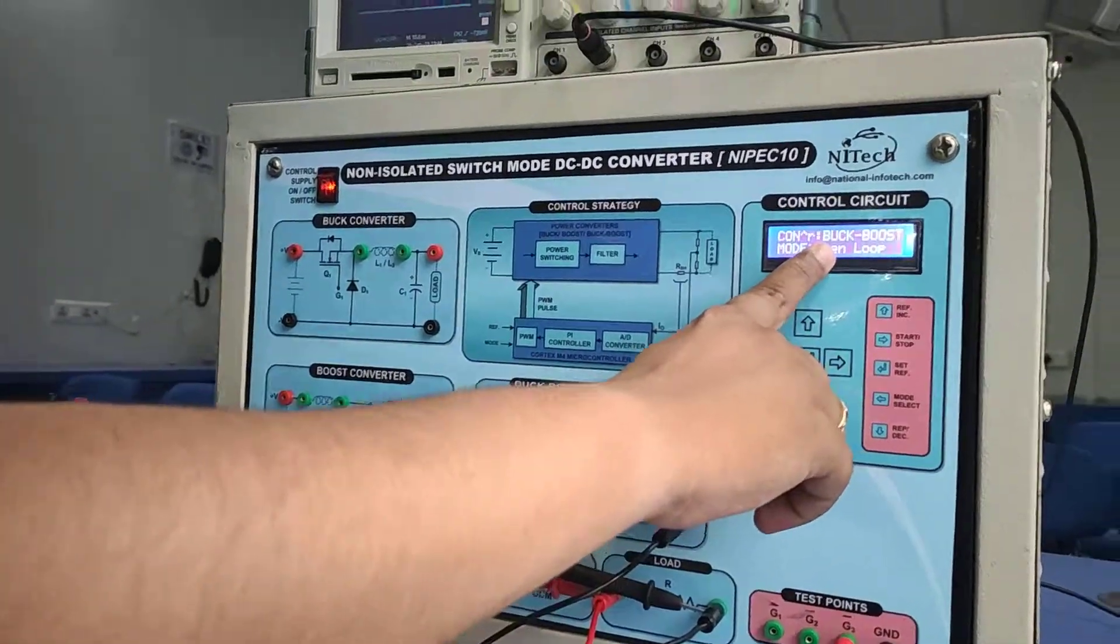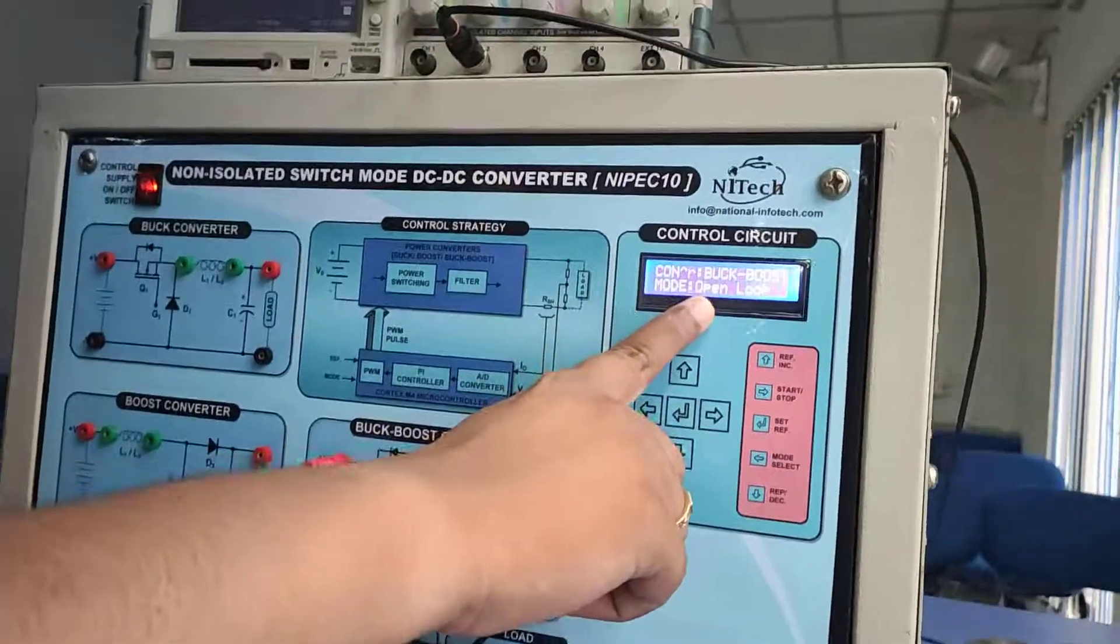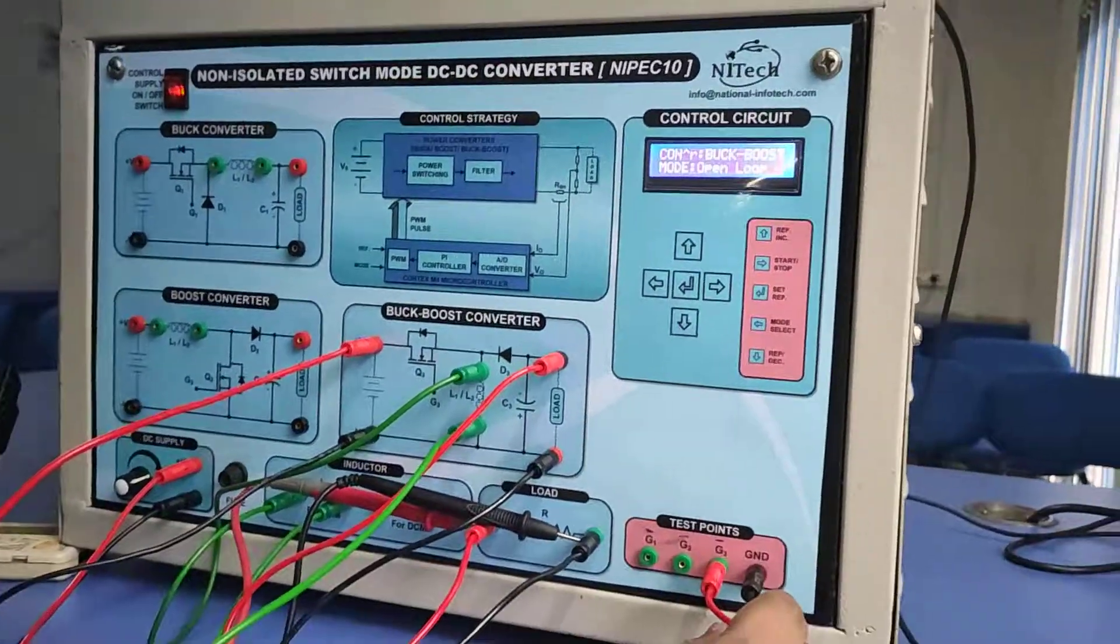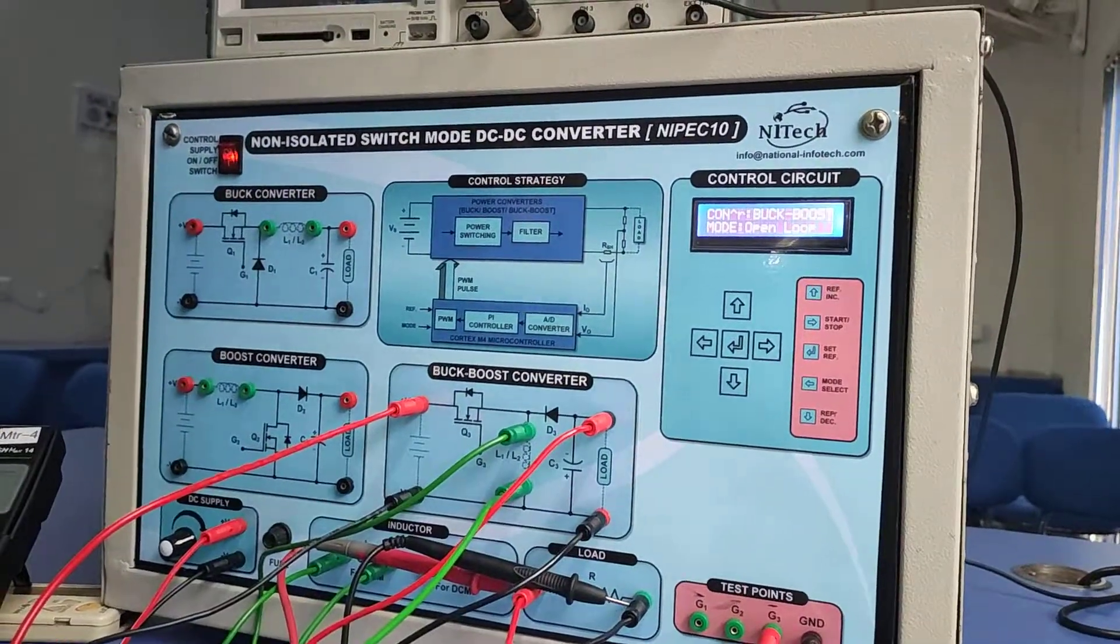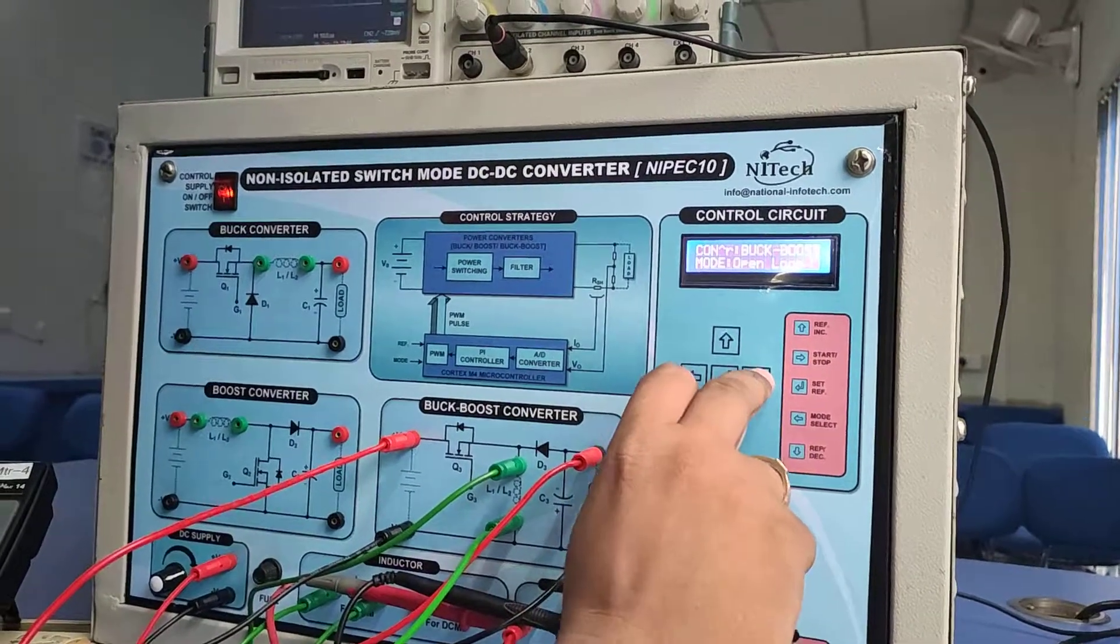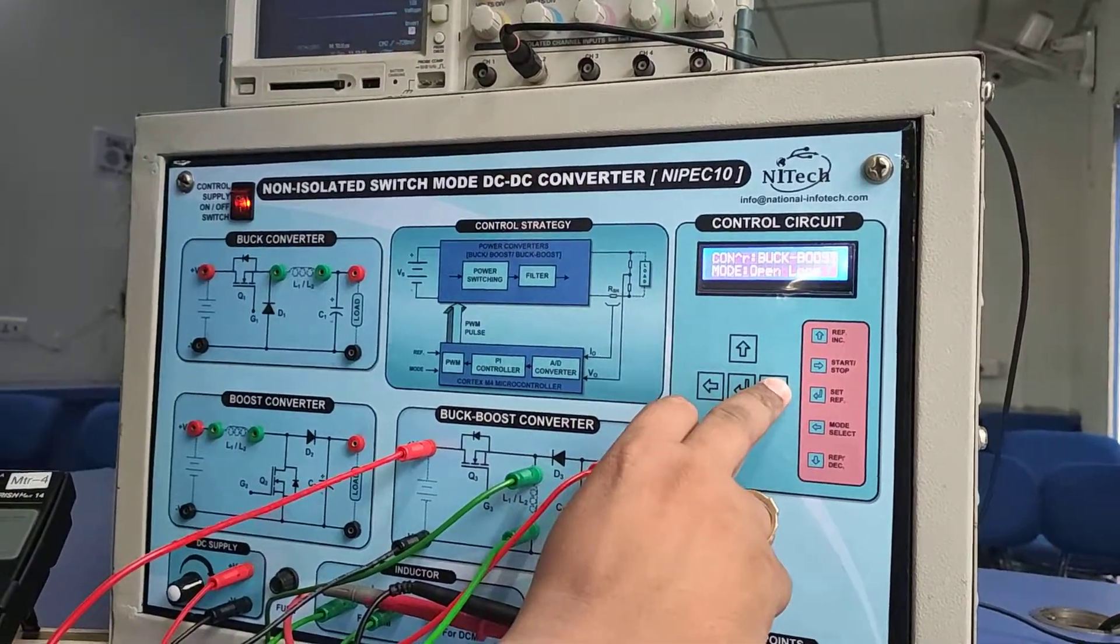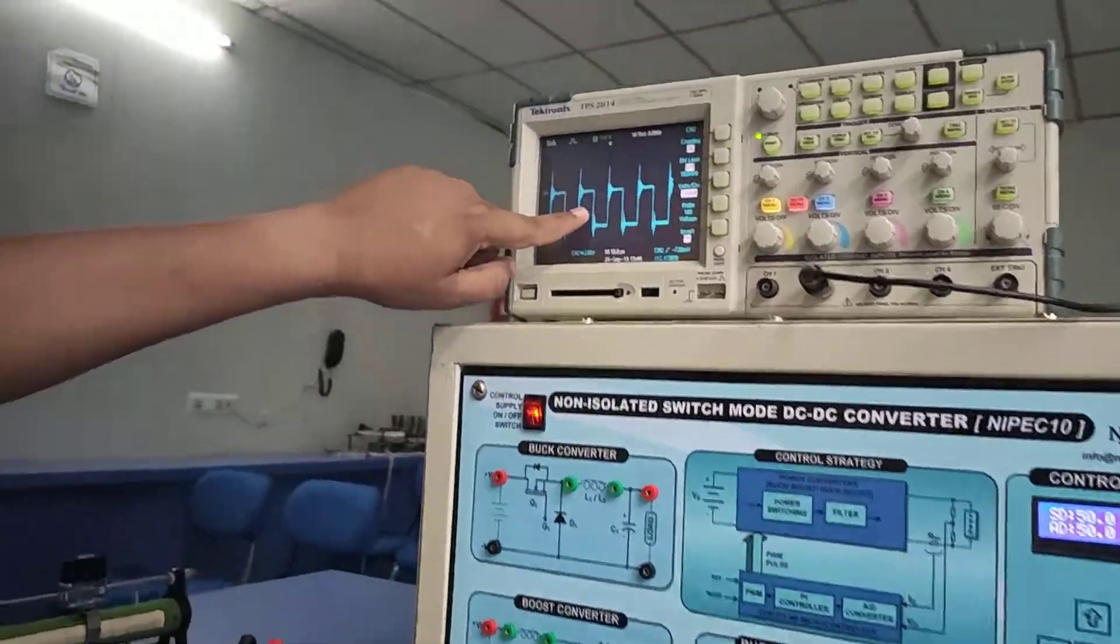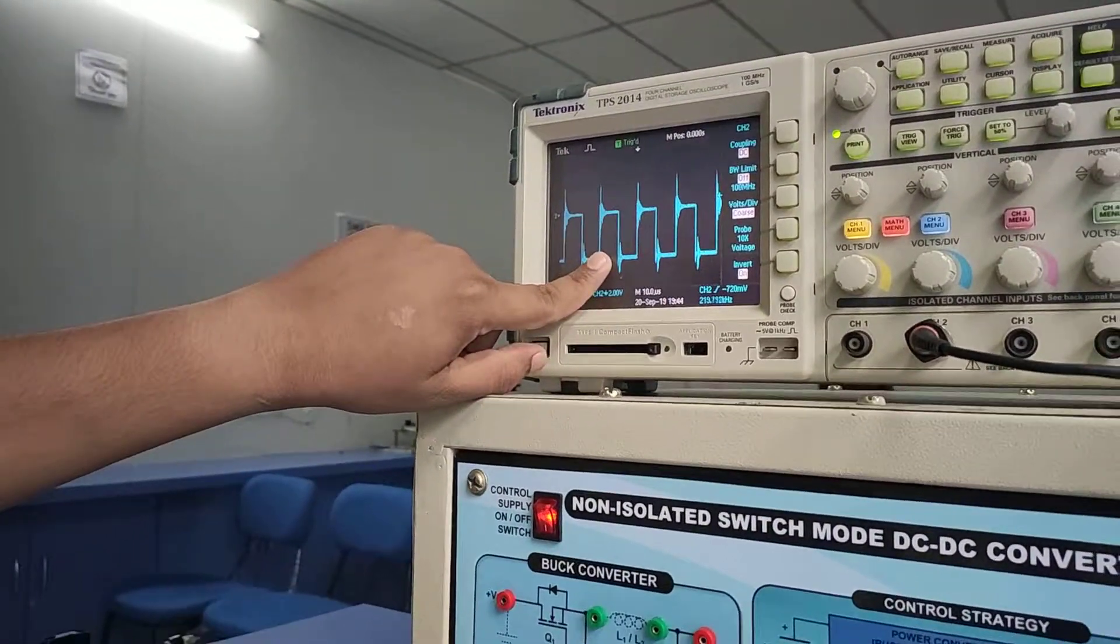We need to change buck-boost to on and display open loop mode. Now I'm connecting the DSO on G3 pulse so we can observe the gate pulses. I'll make the converter on. By default, 50 percent duty ratio is there, which we can see on the DSO.